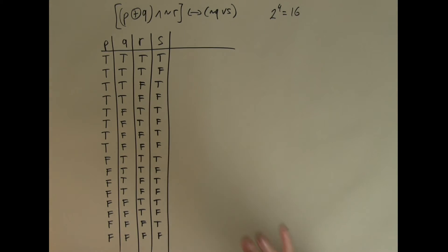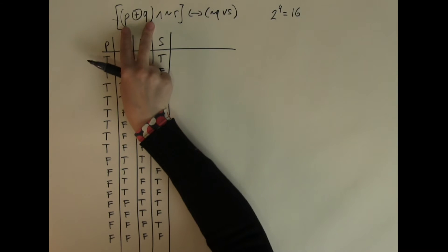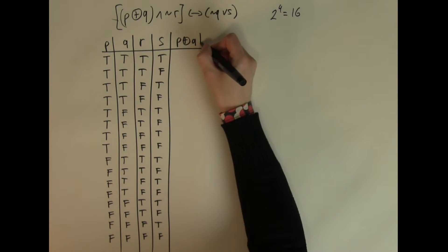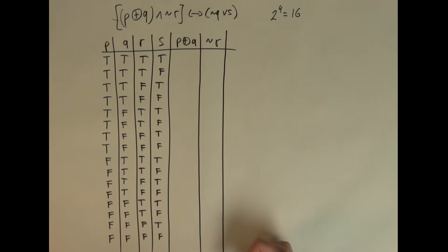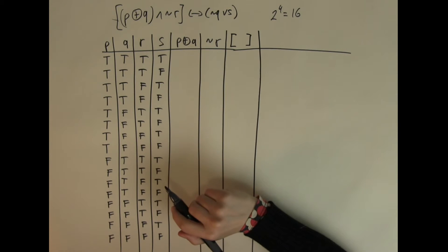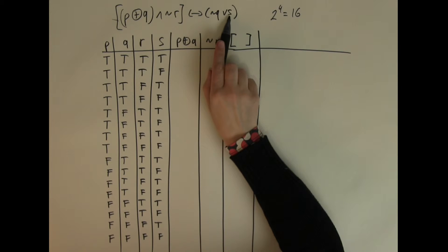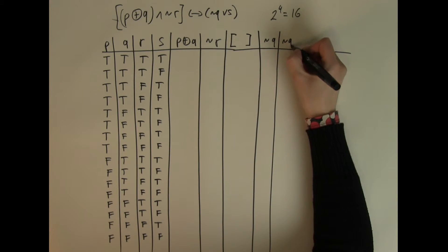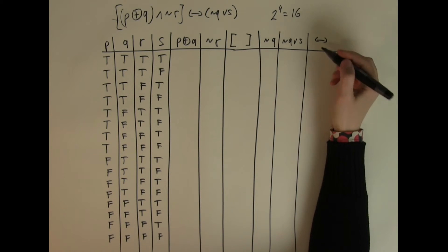Now let's look at the bracket priorities. There is a square bracket containing a normal bracket and a NOT. So I can first combine P XOR Q, then calculate NOT R, and from those calculate what is inside the square bracket. Then on the other side of the IF AND ONLY IF symbol I have NOT Q OR S, so I first calculate NOT Q, then NOT Q OR S, and finally apply the IF AND ONLY IF for the final output.